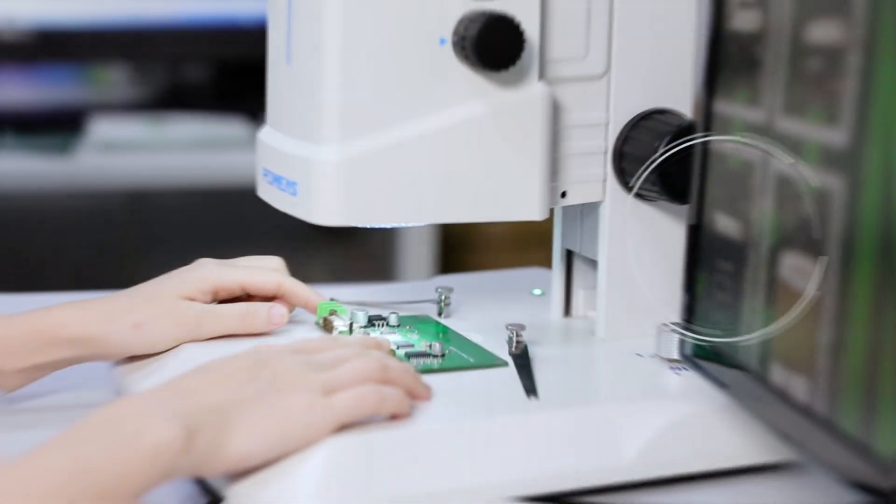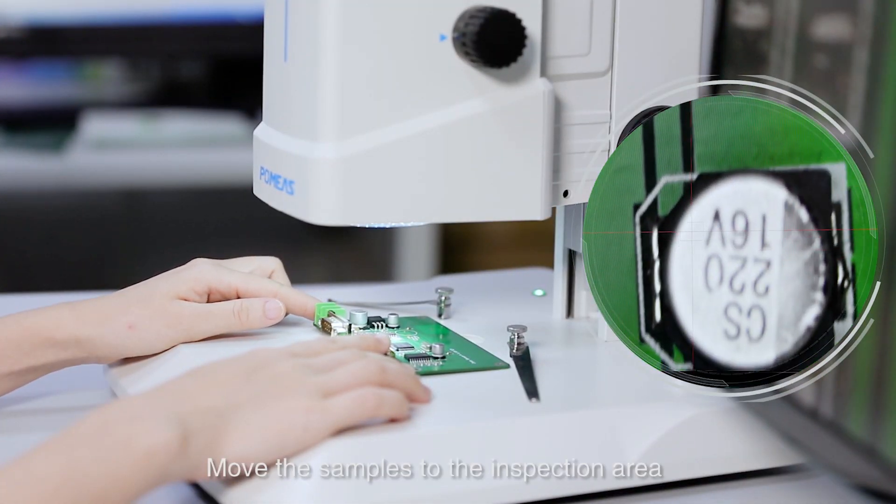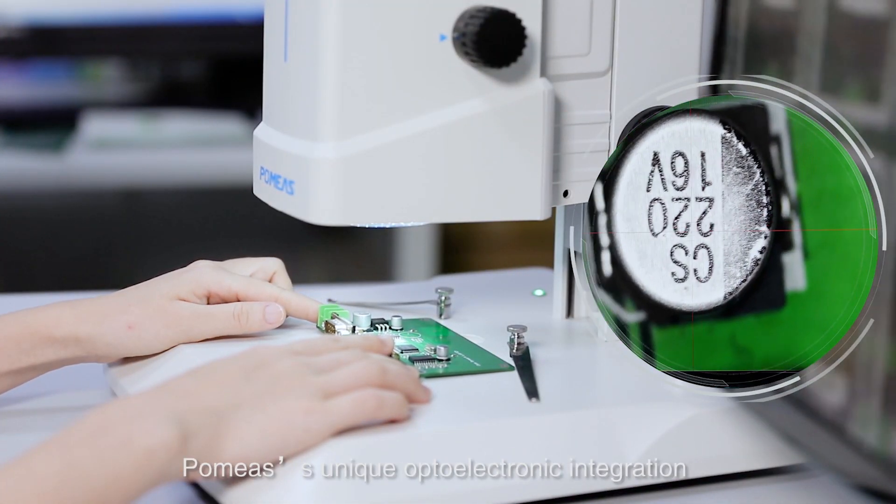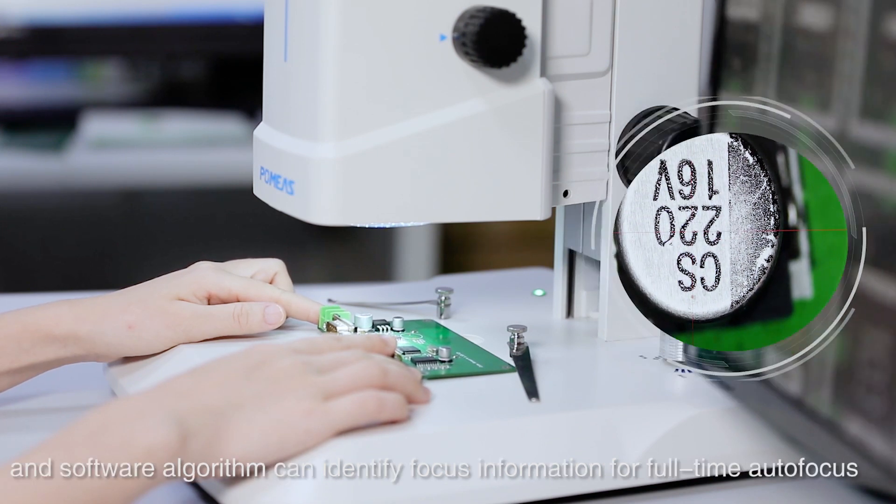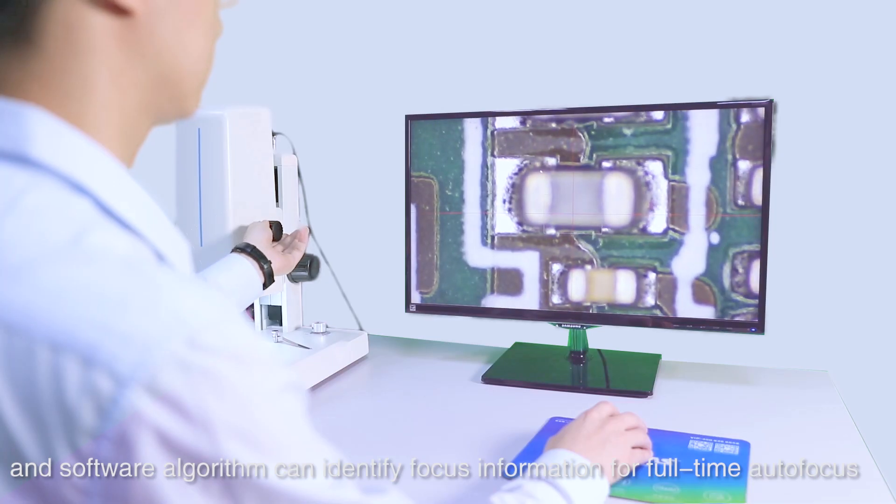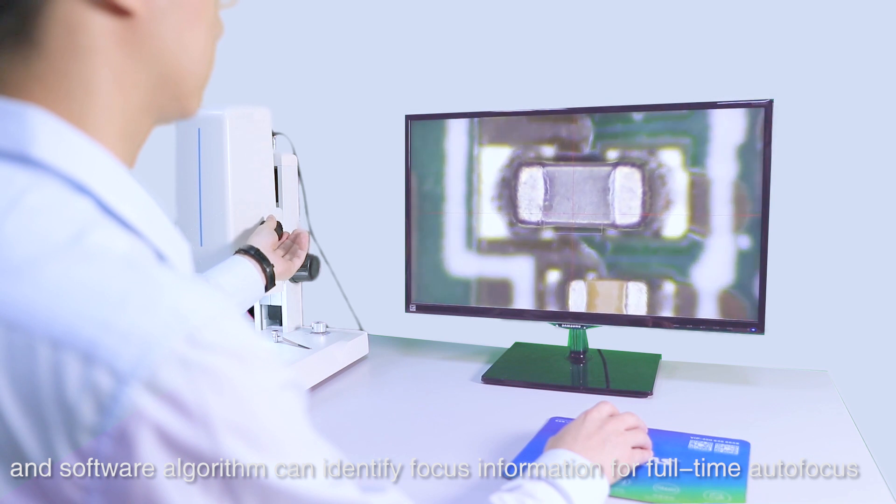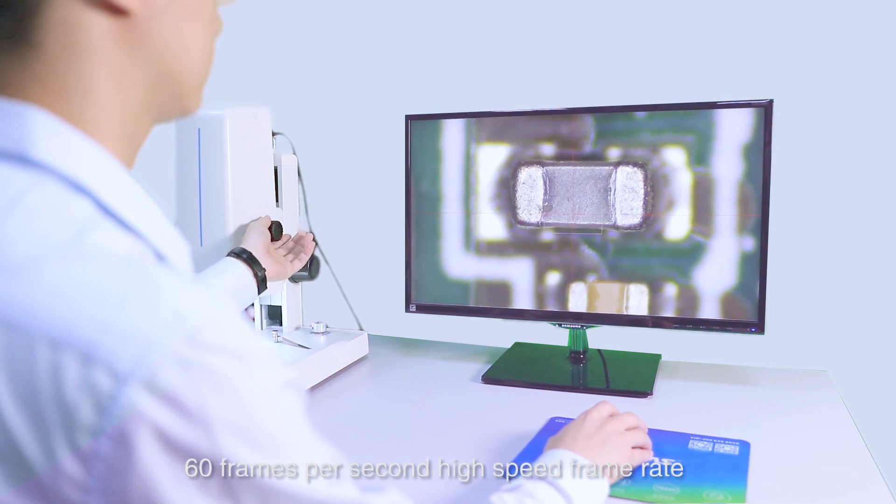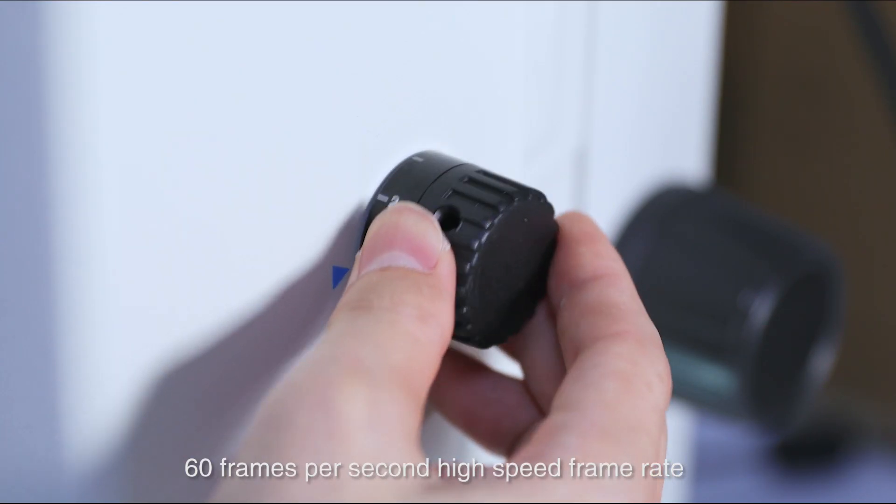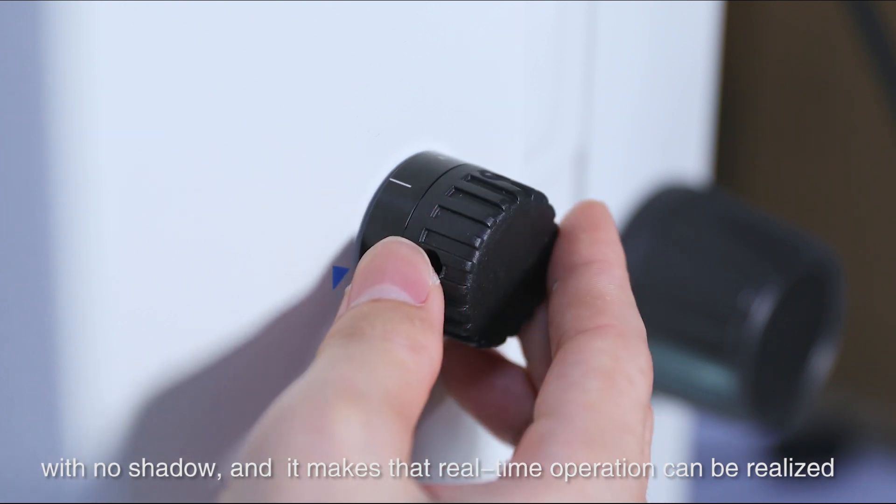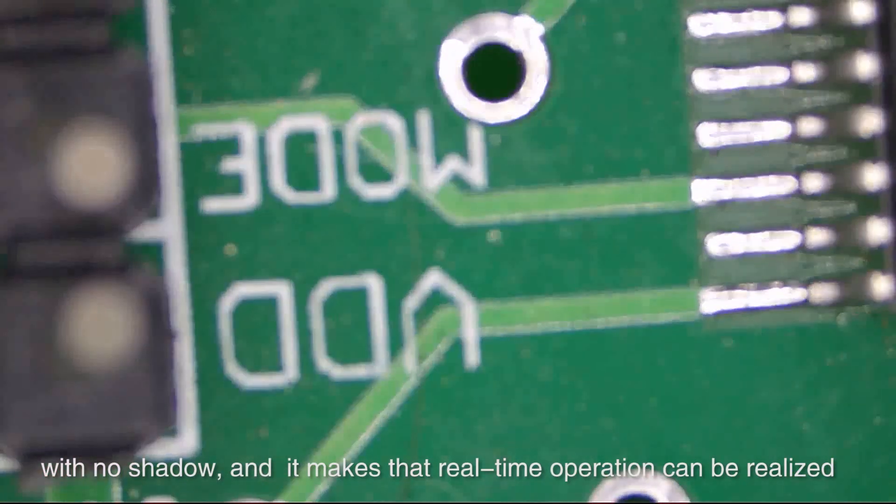Move the samples to the inspection area. Pomius unique optoelectronic integration and software algorithm can identify focus information for full-time autofocus and also use 60 frames per second high-speed frame rate with no shadow, so real-time operation can be realized.